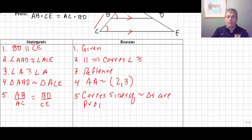And the reason there is corresponding sides of similar triangles are proportional. There's no real shortcut for that, we have to memorize that, but we knew this already, corresponding sides of similar triangles are proportional.